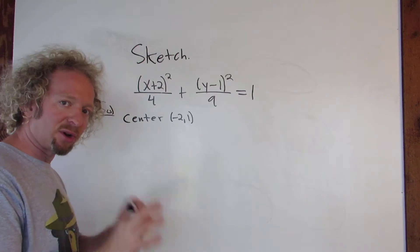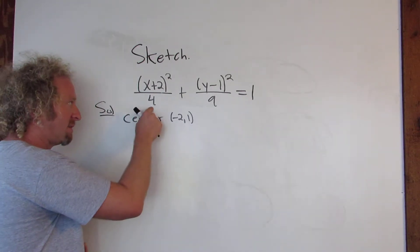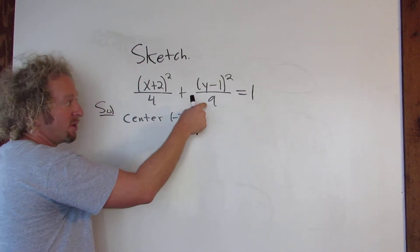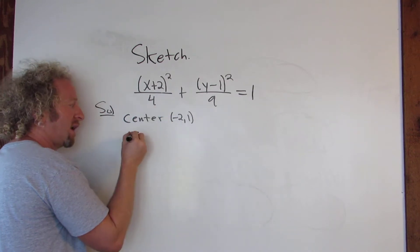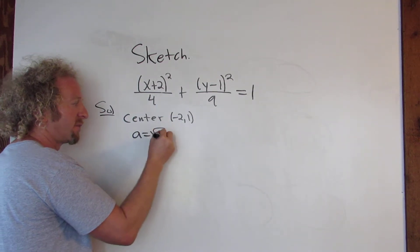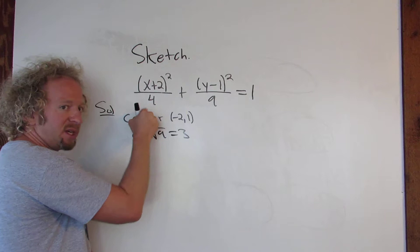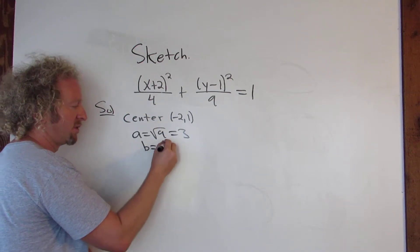Alright, in an ellipse, a is always bigger than b, and a is going to be the square root of one of these bottom numbers. So 9 is bigger than 4, so a is equal to the square root of 9, so that's equal to 3. So b is the square root of 4, which is equal to 2.